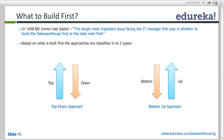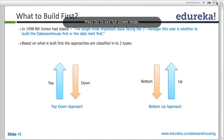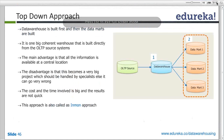The bottom-up approach is the reverse and the easier way. You build data marts based on your specific departmental requirements, collect information from each department into their respective data mart, and then combine all the data marks together to form a data warehouse with consolidated reporting on top. This approach is quicker and is the kind most companies take.